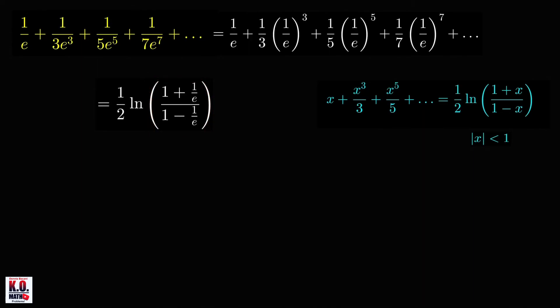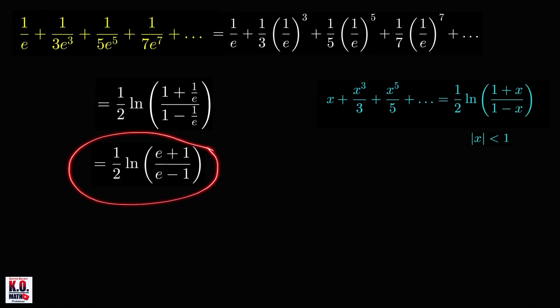And we can simplify this complex fraction here by multiplying e to the numerator and denominator. And we'll get the sum which is equal to one half ln of this quotient. So this is the exact sum of this series. And we may use a calculator to approximate the value of this sum here. And we'll get approximately equal to 0.386.